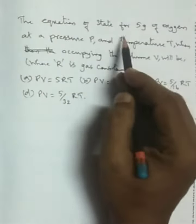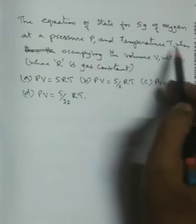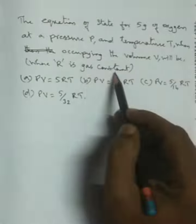The equation of state for 5 grams of oxygen at a pressure P and temperature T when occupying the volume V will be, where R is the gas constant.